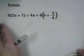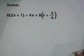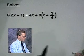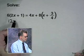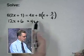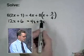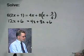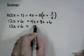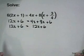Let's take a look at an equation that is an example of one of these two. If 6 times (2x plus 1) equals 4x plus 8 times the quantity (x plus 3/4), the first thing we would do to solve this equation is remove the parentheses: 12x plus 6 equals 4x plus 8x plus 6.